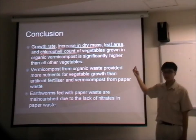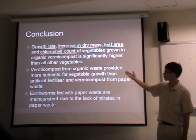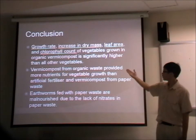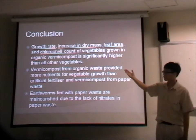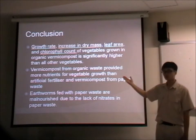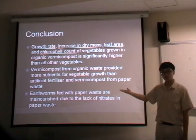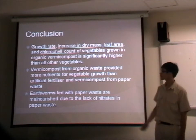In conclusion, the growth rate, dry mass, leaf area, and chlorophyll content of vegetables grown with organic vermicompost are significantly higher than all other setups. Vermicompost from organic waste provides more nutrients compared to the paper vermicompost setup. Plants fed with paper waste vermicompost are less nourished and unable to provide sufficient nutrients that the plant needs.